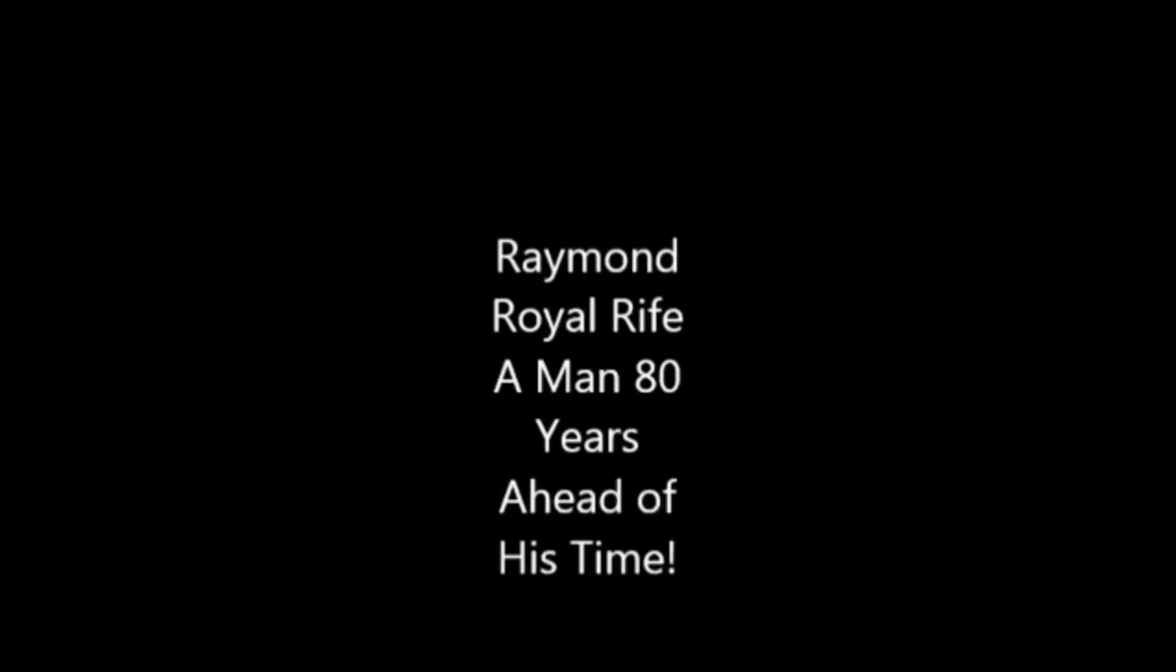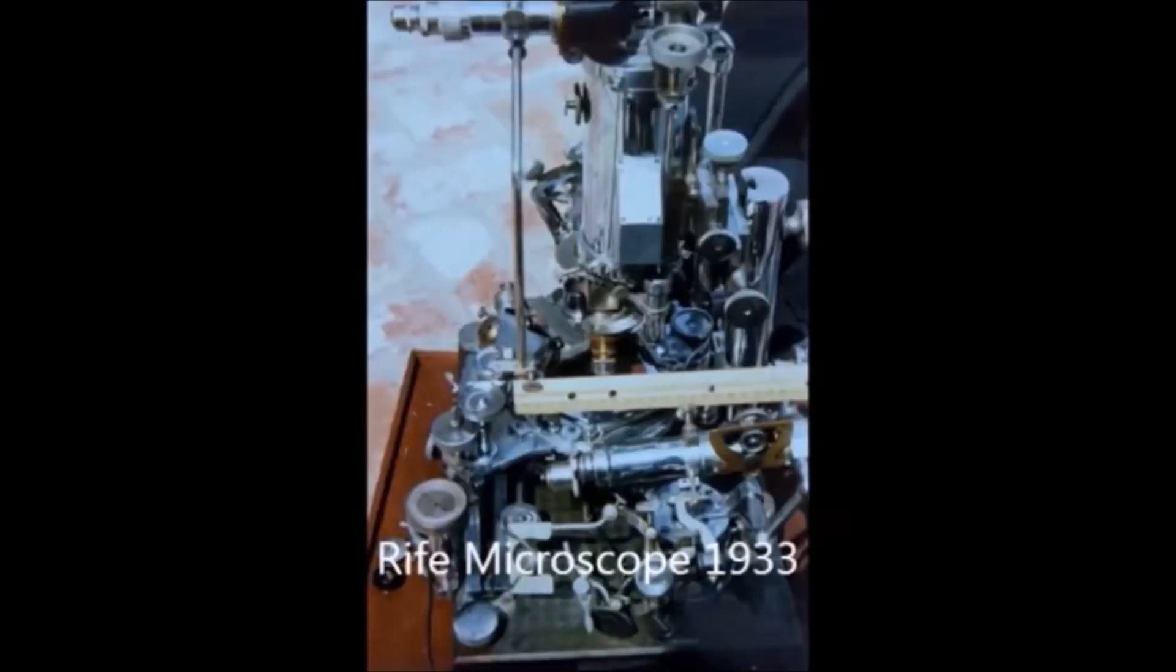This was possible because he claimed he could achieve 10,000 to 20,000 times magnification with perfect resolution and bypass the Abbe limit. The Abbe limit for ordinary light microscopy is about 2,000 times. This video explains the how and why his claims are true.